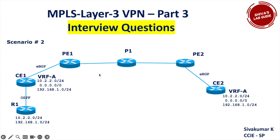In this type of question, the interviewer is trying to check — when a route is missing end-to-end from one CE to another CE — what checkpoints will you do, and ultimately you have to answer why the route is not appearing in R1.